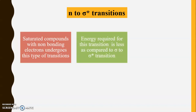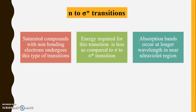The energy required for n to sigma star transitions is less as compared to the sigma to sigma star transition. As these transitions require less energy, they occur at a higher wavelength compared to sigma to sigma star. The absorption bands occur at longer wavelengths in the near ultraviolet region. However, the near ultraviolet region gives very less information compared to the normal UV region ranging between 200 to 400 nanometers.